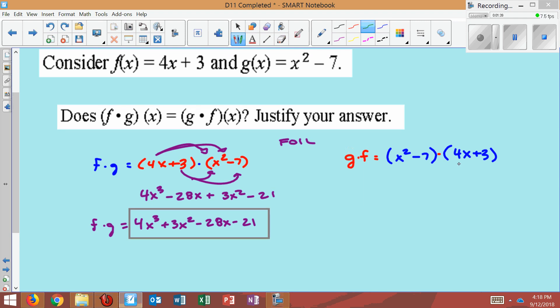Again, we FOIL. So x squared times 4x is 4x cubed. x squared times 3 is 3x squared. Negative 7 times 4x is negative 28x. And finally, negative 7 times 3 is negative 21. As we can see,